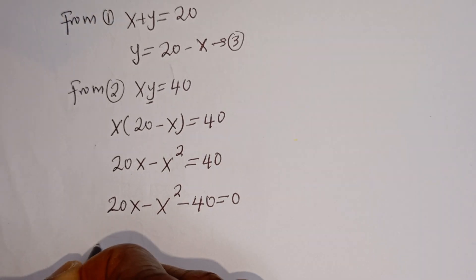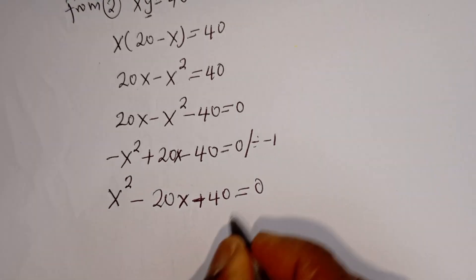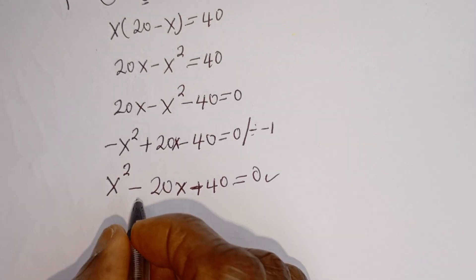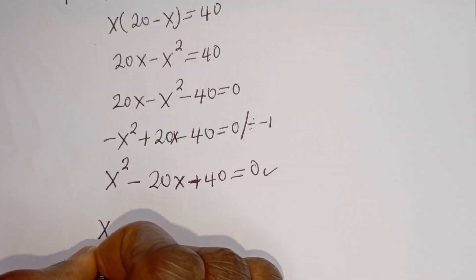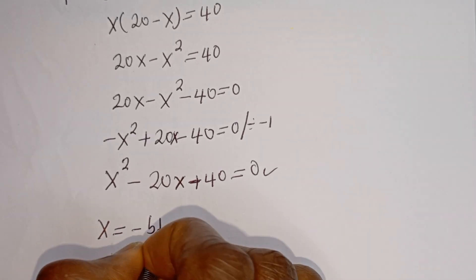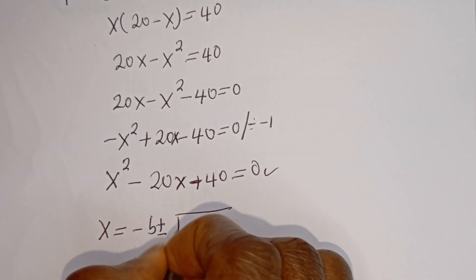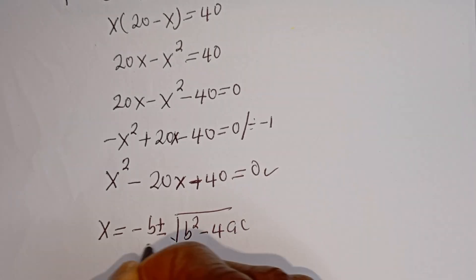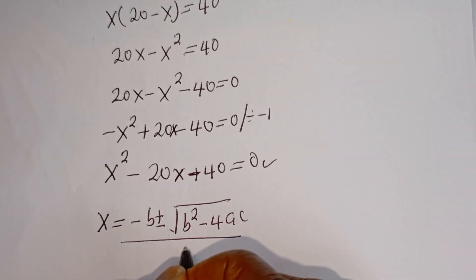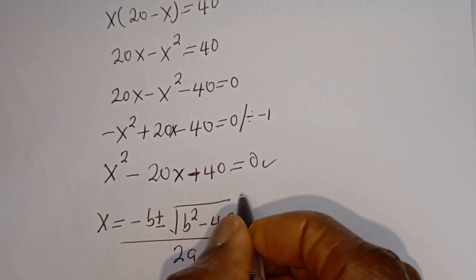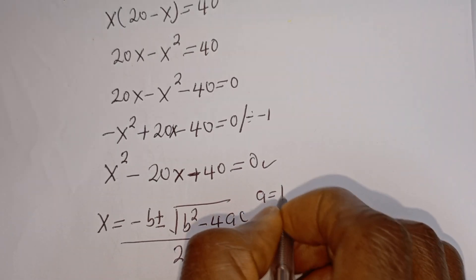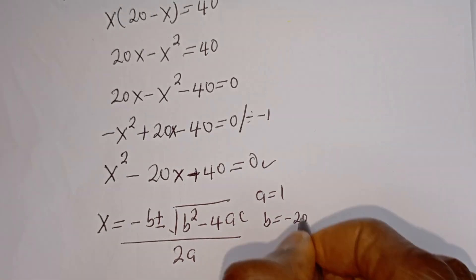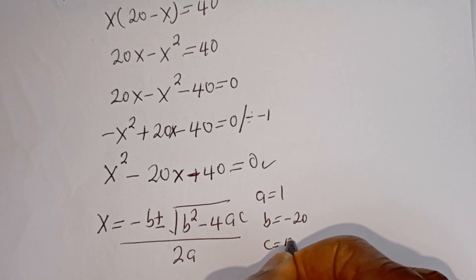Now let's put this in standard form. This is a quadratic equation. Let's solve this using the quadratic general formula. From our quadratic general formula, x is equal to minus b plus or minus square root of b² minus 4ac, over 2a. From this equation: a is equal to minus 1, b is equal to 20, c is equal to minus 40.